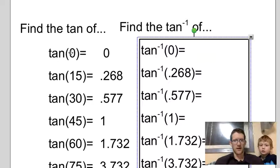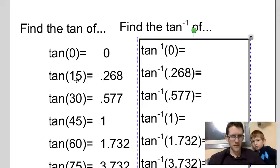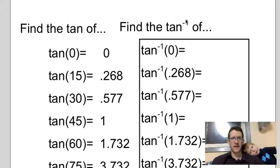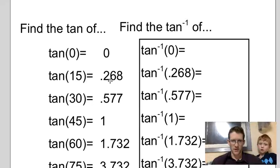So we found the tangent of angle of 0 degrees, the tangent of an angle that was 15 degrees, the tangent of an angle that was 30 degrees, 45, 60, 75, and then finally 90. So this time, we're going to find the inverse tangent. But this time, instead of finding the inverse tangent of 0 degrees or 15 degrees or 30 degrees, we want to find the inverse tangent of that tangent ratio.